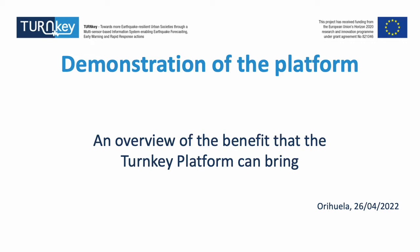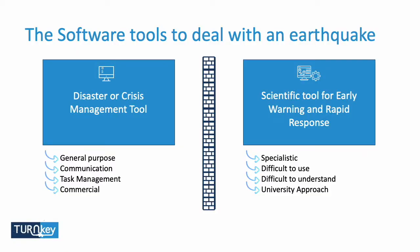Normally, in terms of software, we have two different kinds of software that deal with emergency and dealing with an earthquake. On one side, there are disaster crisis management tools — they are generic, general purpose, focused on communication and task management. They are very commercial, ready-to-use, and very generalistic; their focus is to manage any kind of emergency, so they are not specific.